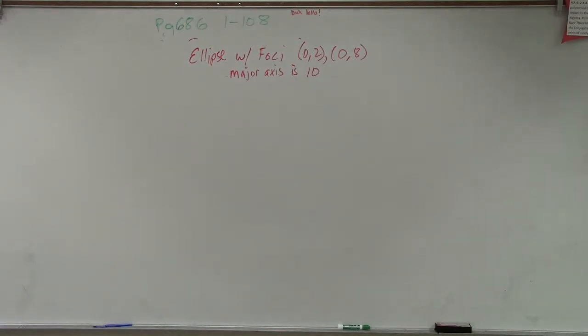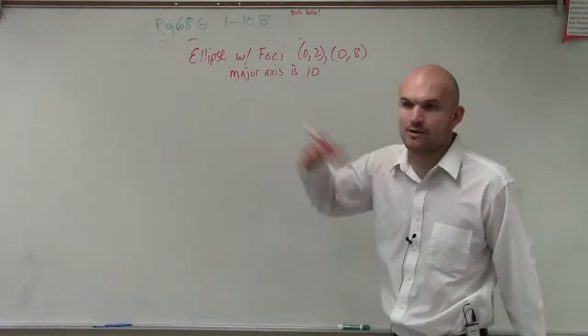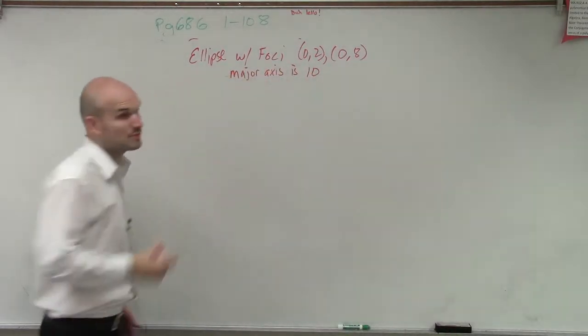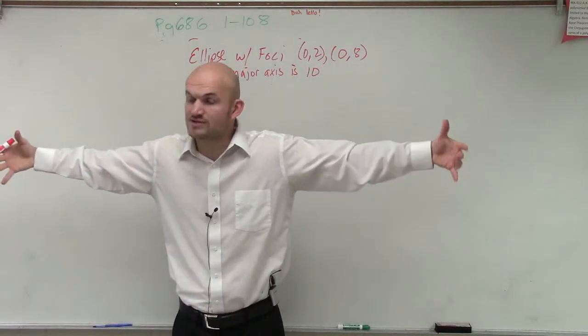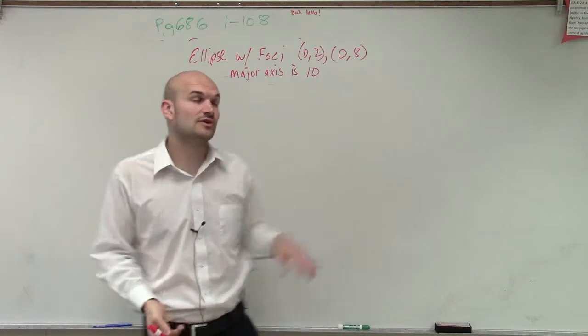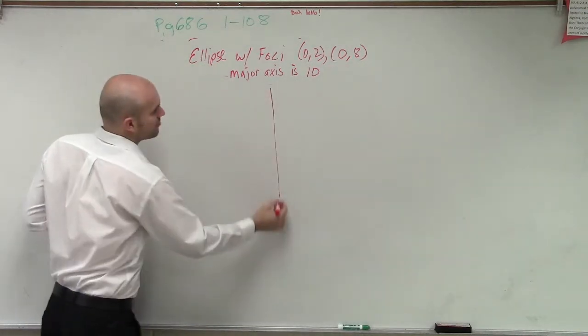When you're not given an equation, the best thing you need to do is graph it. Plot the points, plot what you're given. We have an ellipse. We don't know if the ellipse has a major axis that's horizontal or vertical, so I'm going to plot what I'm given.